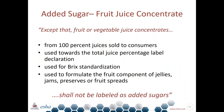From the definition, sugars concentrated from fruit or vegetable juices in excess of what would be expected from the same volume of 100% fruit juice of the same type would be considered added sugar — except for a few exemptions. These exemptions include 100% juices sold to consumers for reconstitution at home, fruit and vegetable juice concentrates used toward the total juice percent label declaration, those used for BRIX standardization, and those used to formulate the fruit component of jellies, jams, preserves, or fruit spreads — none of these shall be labeled as added sugar.